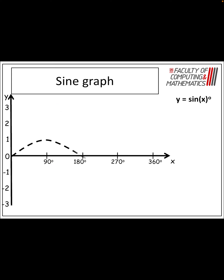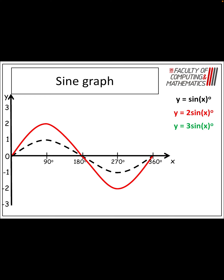There's sine again — maximum value at 90, minimum value at 270, crosses the x-axis at 0, 180, and 360. But what happens with 2 sine x? As you can see, it's been stretched up and down the y-axis. That 2 at the front gives you a maximum value of 2 at 90 degrees, and a minimum value of negative 2 at 270 degrees. With 3 sine x, we stretch it even more — maximum value of 3, minimum value of negative 3, again at 90 and 270. With a half, we're squashing it a little bit.